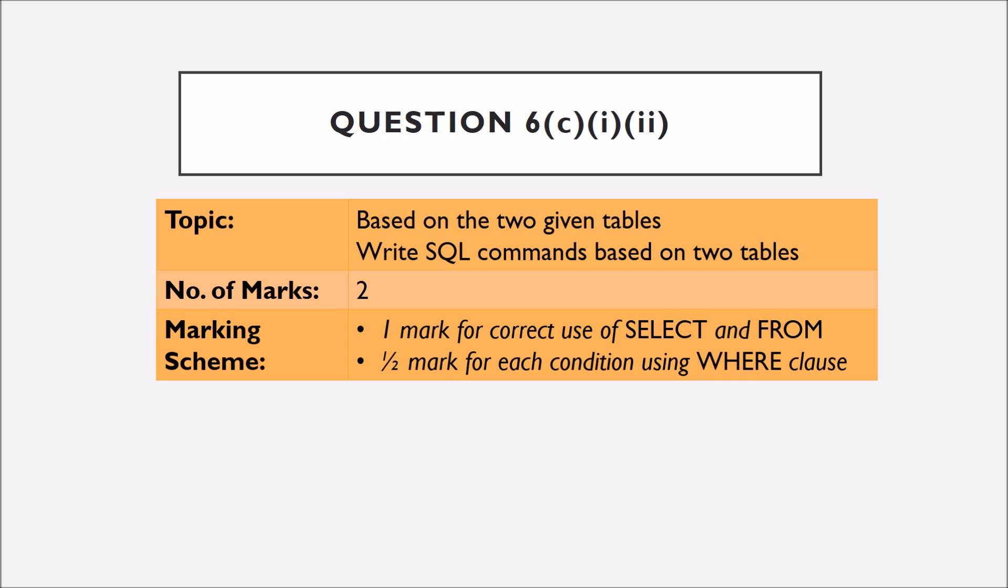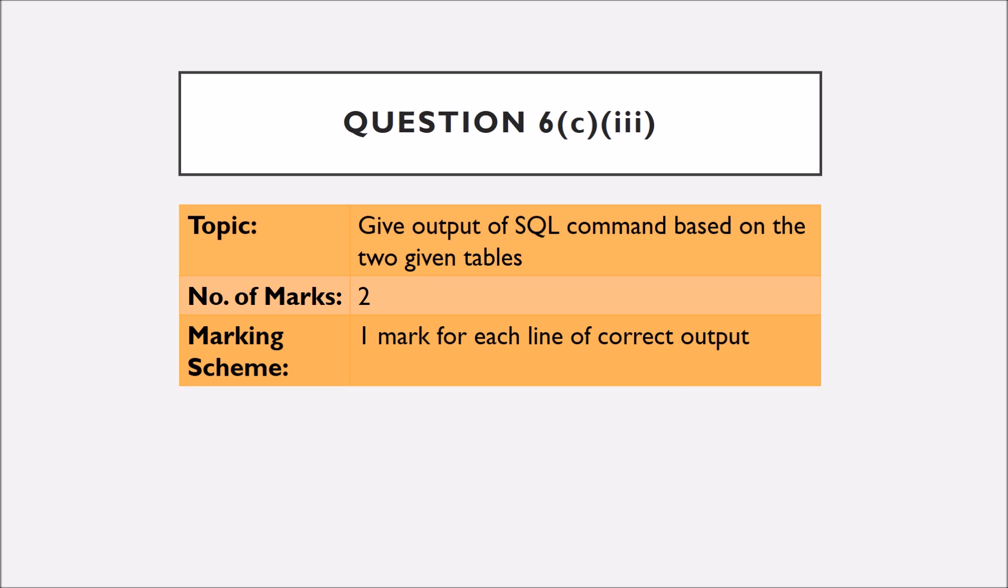Question number 6, Part C is based on 2 tables. You have to write SQL commands based on 2 tables. It is of 2 marks and has 2 parts, 1 and 2. Usually, partial marking is done in this question. One mark is for writing correct use of select and join and half mark for each condition using where clause. In question number 6, Part 3, you are supposed to give the output of SQL command based on 2 given tables. It is of 2 marks and 1 mark is given for each line of correct output.